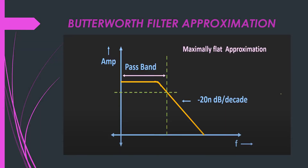Butterworth filter has a very flat pass band and the roll off of this filter is at the rate of 20 N dB per decade. So if you are designing a 4th order filter, the roll off will be at the rate of 80 N dB per decade, or if you are designing an 8th order filter, it will have a roll off at the rate of 160 N dB per decade. First of all let us see how to design the 2nd order Butterworth low pass filter, and based on that we will see how to design the higher order Butterworth filters.